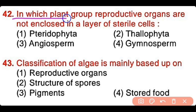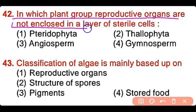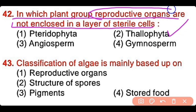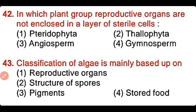Question number 42: In which plant group are reproductive organs not enclosed in a layer of sterile cells? Pteridophyta, thallophyta, angiosperm, or gymnosperm? The correct answer is option 2. Thallophytes have reproductive organs not covered by sterile cells.